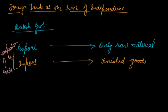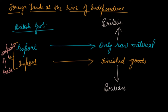India was exporting raw material to Britain. Where your goods are actually going, and from which country they are coming — this is known as the direction of trade.